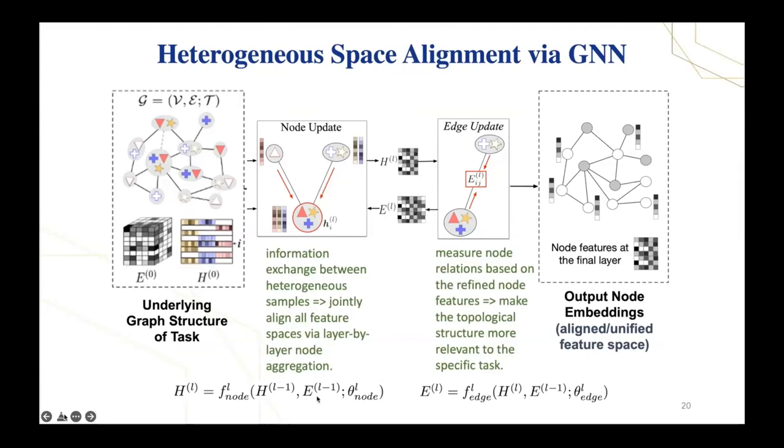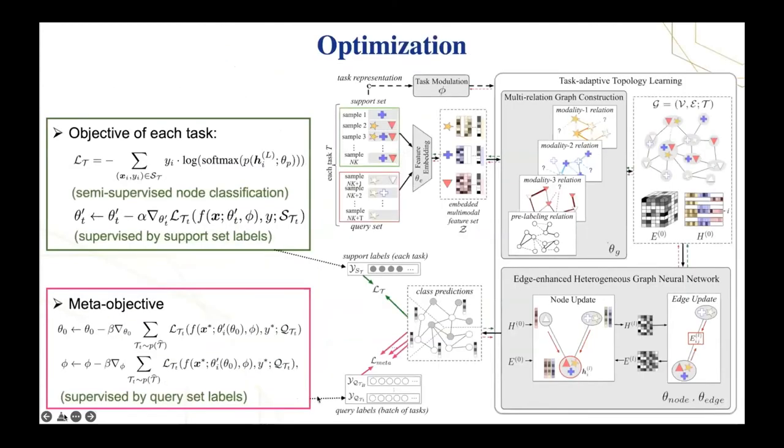This slide shows the training of the entire model. The training algorithm is similar to optimization-based meta-learning. The green arrows are backpropagation for inner-loop task adaptation supervised by each task's support labels. The pink arrows are backpropagation for updating the meta-knowledge, supervised by the query labels over a batch of tasks.